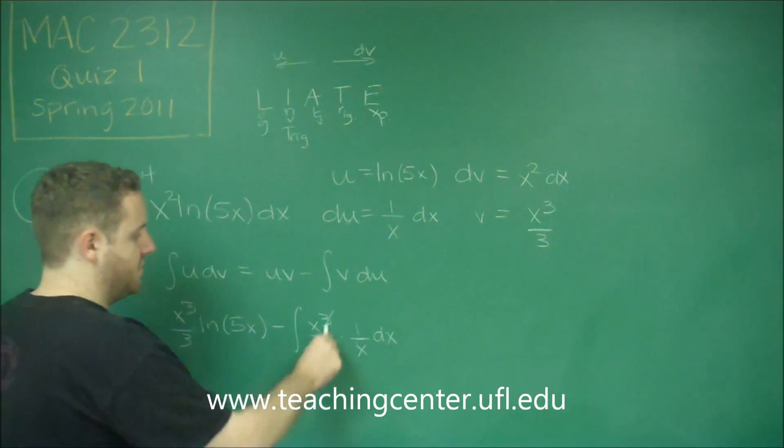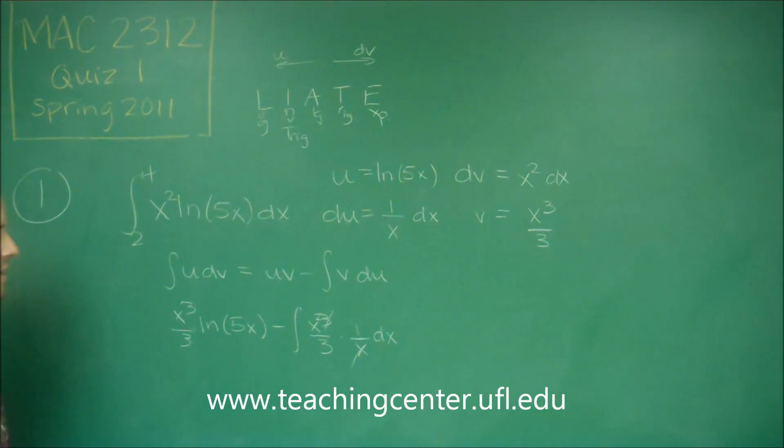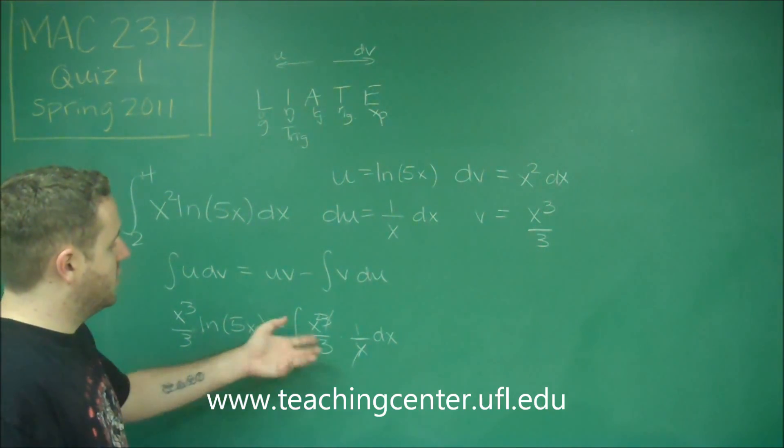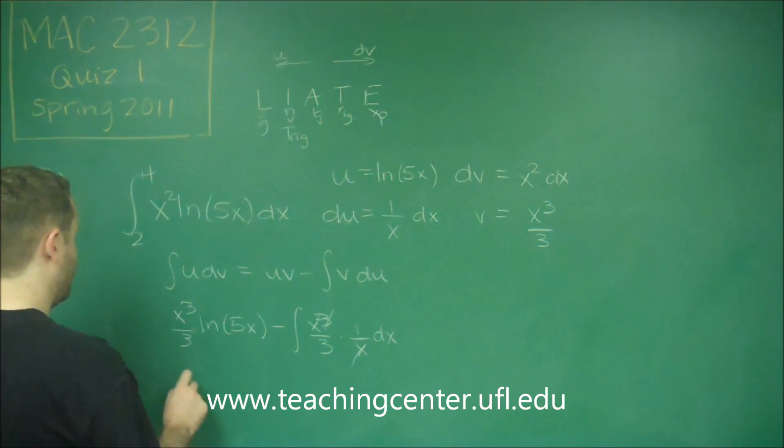You can see here, one of these x's will cancel. We just get x squared. The integral of x squared over 3 is now a simple integral where you don't have to do anything special. So what we end up getting here is x cubed over 3, ln 5x.